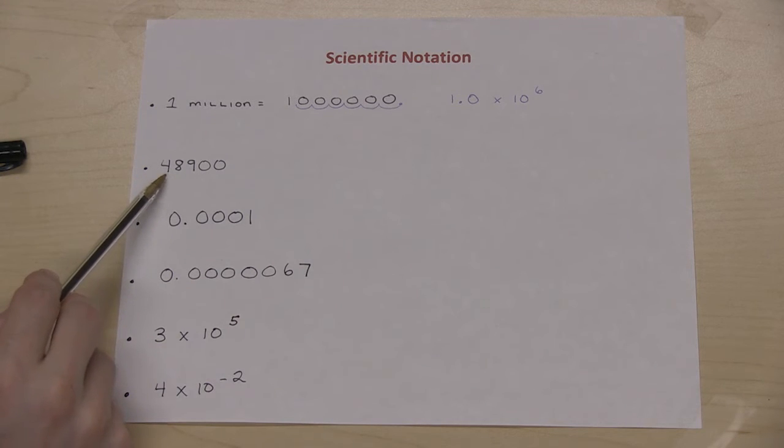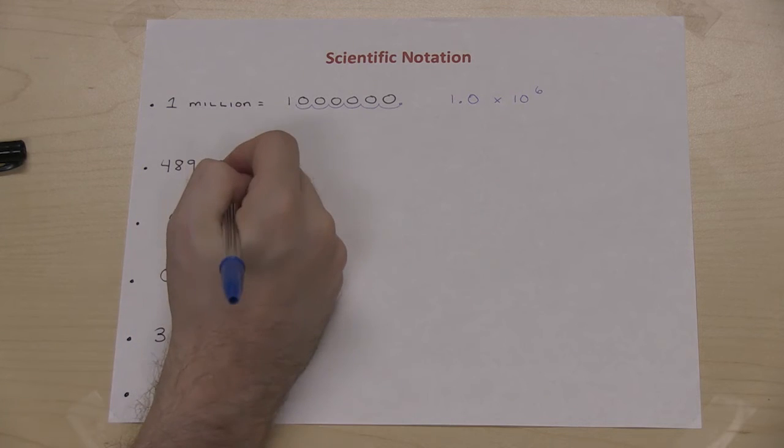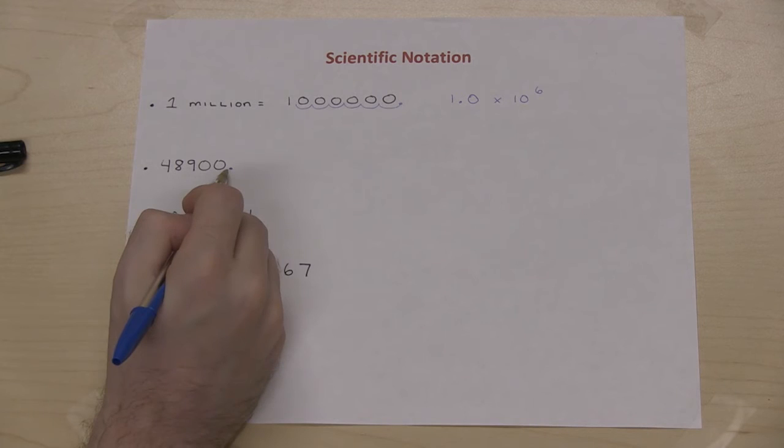Suppose I have the number 48,900. If I want to write that in scientific notation, I take the decimal point, which again is at the end, and I move it until I get to a number that is between 1 and 9.